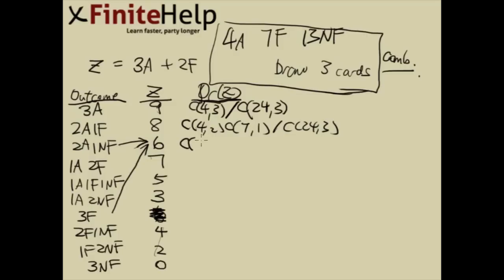So the probability that Z equals 6 is the probability of 2 aces, 1 non-face. 2 aces is 4 choose 2, 1 non-face is 13 choose 1. And we're going to add that with 3 face, which is going to be 7 choose 3. And we take that whole thing again, divide it by the sample space.